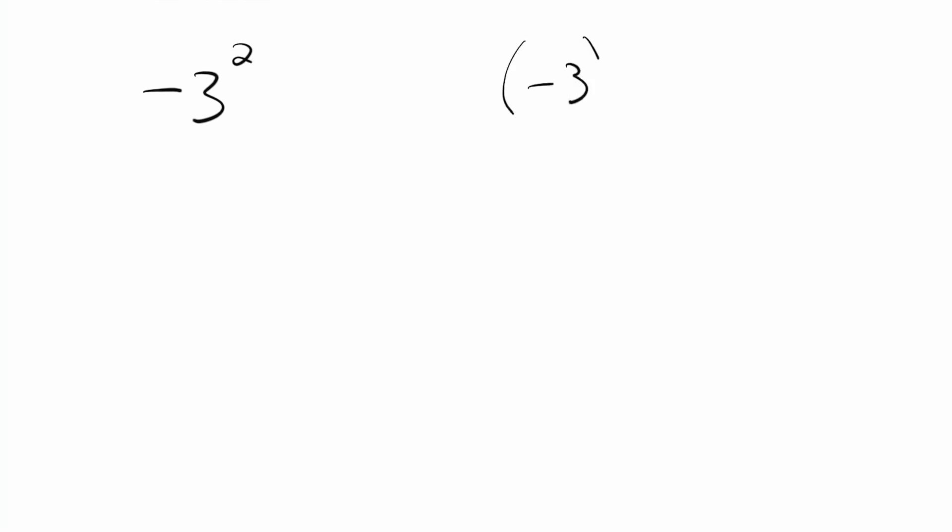What is the mistake? There are two problems that sound like they're exactly the same thing. They almost look like they're the same thing, and yet they come up with completely different answers. One problem is negative three squared, and the other is negative three squared in parentheses.